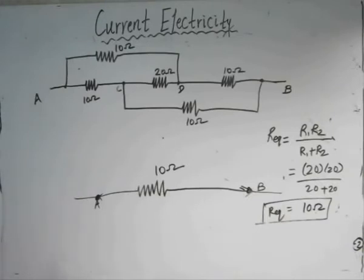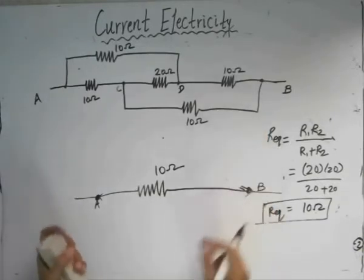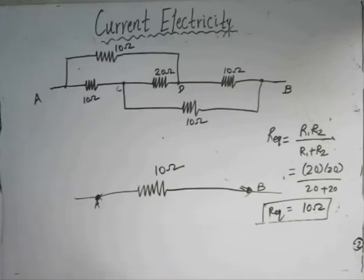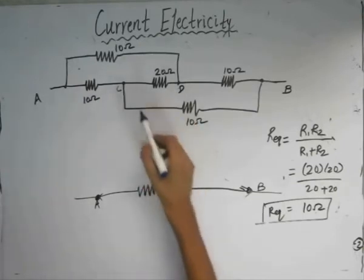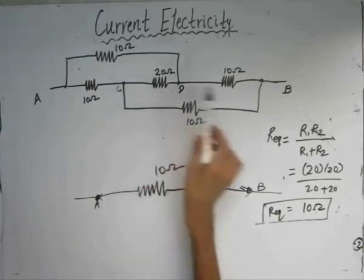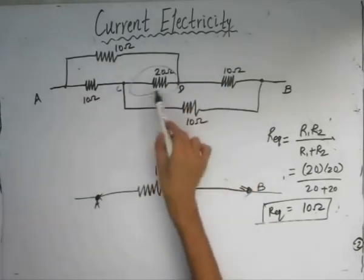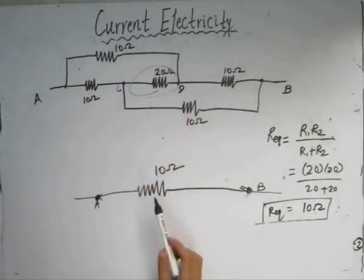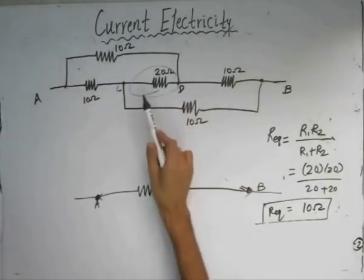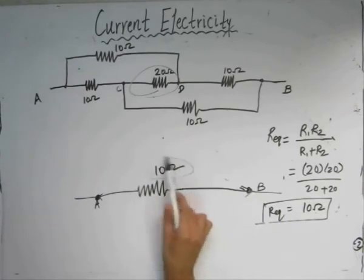So the equivalent resistance between points A and B is 10 ohms. By applying the Wheatstone Bridge principle, the diagonal branch becomes redundant, and we can see that the equivalent resistance between A and B is independent of the resistance of that branch — whatever the resistance of that branch, we get the same equivalent resistance.